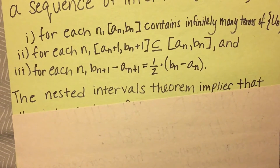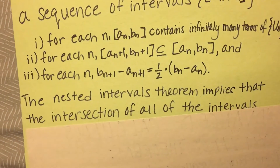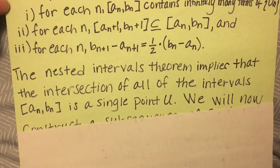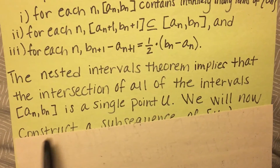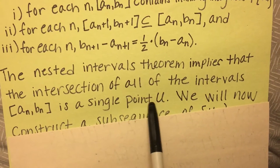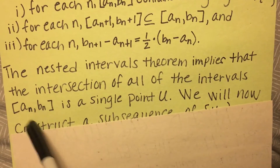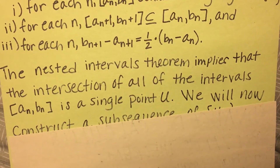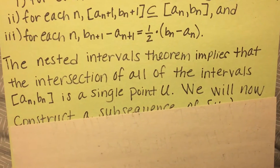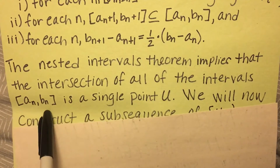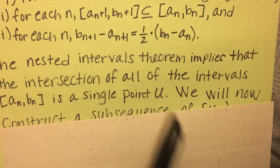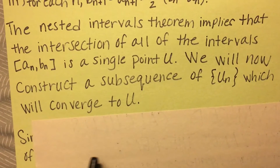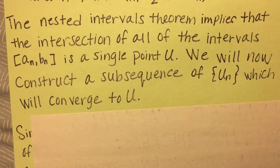The Nested Interval Theorem implies that the intersection of all intervals [A sub N, B sub N] is a single point, which we call U. We will now construct a subsequence of U sub N which will converge to U.